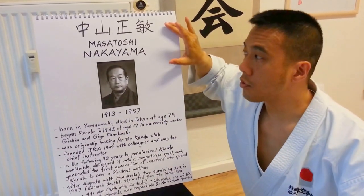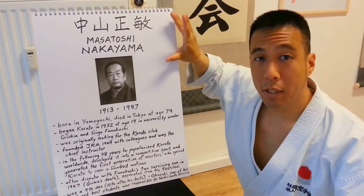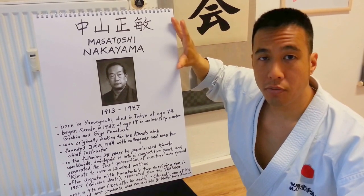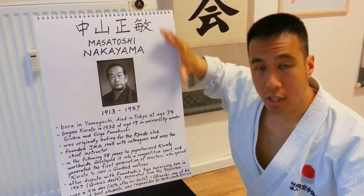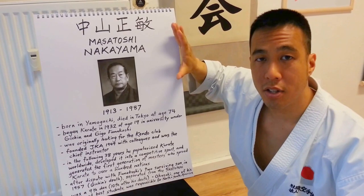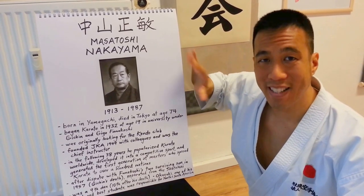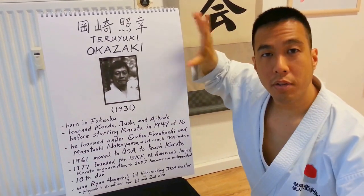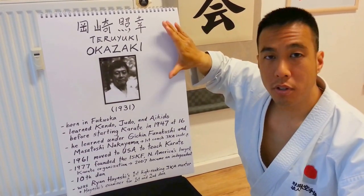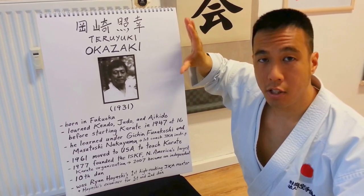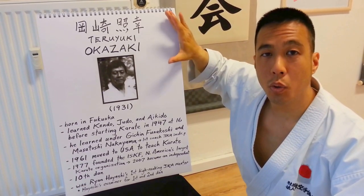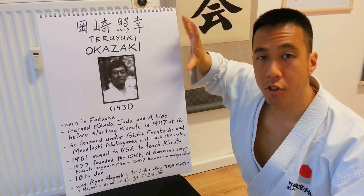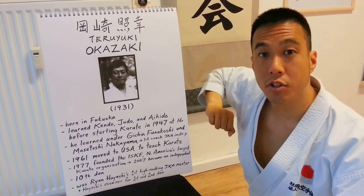One of his students, Masatoshi Nakayama, was one of the founders of the Japan Karate Association, its first chief instructor, and is seen in the martial arts community as the one karate sensei most responsible for spreading karate worldwide. One of his very early students — a direct student of Master Nakayama and Gichin Funakoshi — was Master Okazaki, who since 1961 has been building up JKA Shotokan Karate in both North and South America.